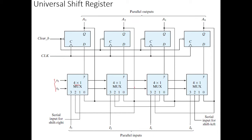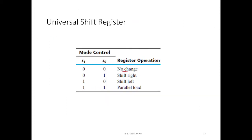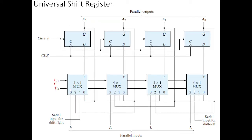Now let's see how to connect the inputs. We will start with parallel load. When S1 and S0 are both 1, we perform parallel load, which represents decimal 3. Therefore, we connect the parallel load input to line 3 of the mux. All line 3 inputs of the muxes will be connected to the external inputs I0, I1, I2, and I3 — these are the parallel input lines.